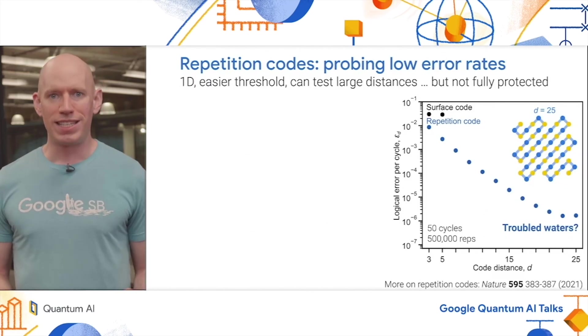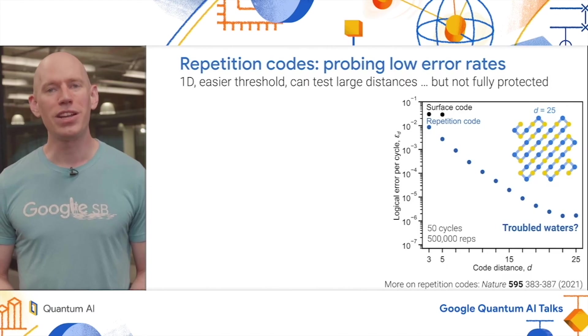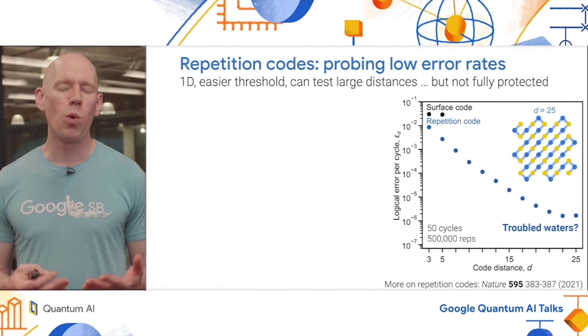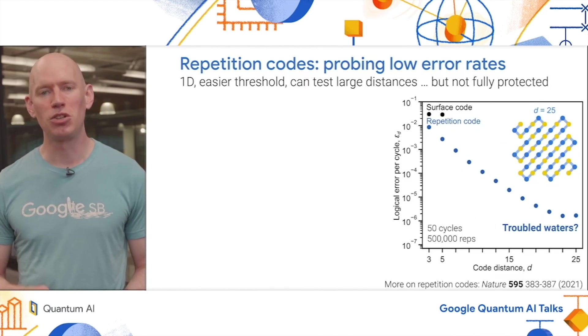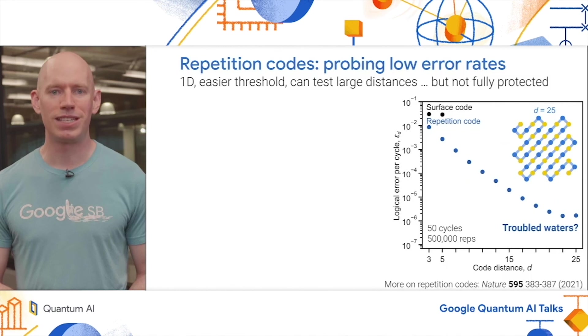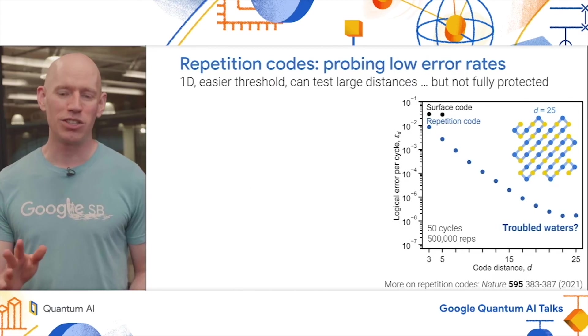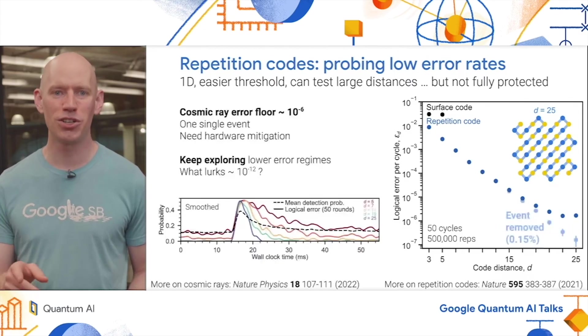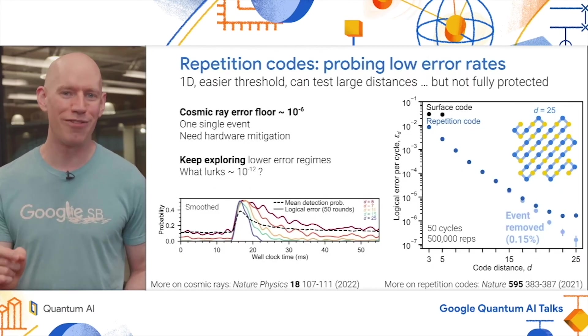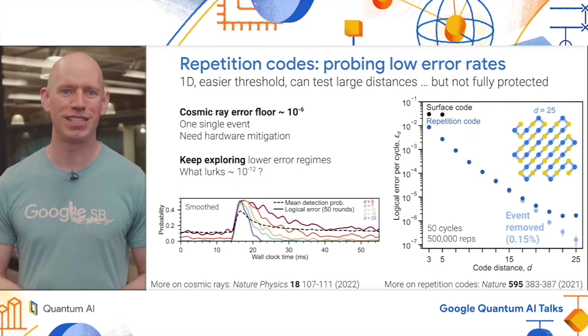We're interested in very low error rates, exponentially lower than what we're looking at in the surface code now. A way to explore those today is using repetition codes, which are like a one-dimensional easier version of surface codes. They allow us to test these larger distances, but they're not fully protected logical qubits. We can fit, for example, a distance 25 repetition code snaking across the same 49 qubits that we use for the distance 5 surface code. We see exponential suppression of the logical error as we increase the code size up to a point. It looks like we're running into trouble at about one in a million. It turns out that that particular floor was due to a single cosmic ray event that struck the device during the course of the 500,000 repetitions that we ran for this experiment. If you remove that very narrow slice of data, you see that the exponential suppression continues down to about the 10 to the minus 7 level.